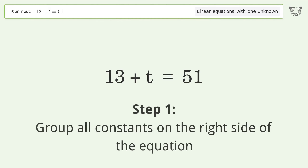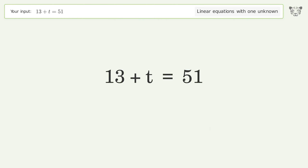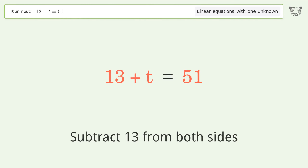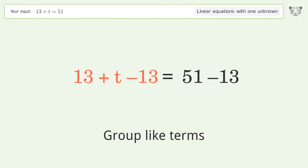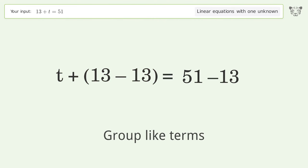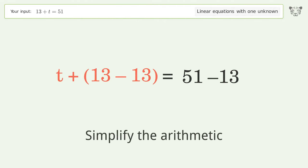Group all constants on the right side of the equation by subtracting 13 from both sides. Then group like terms and simplify the arithmetic.